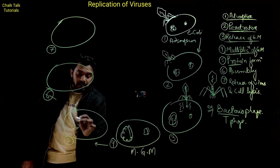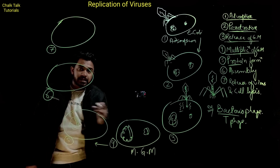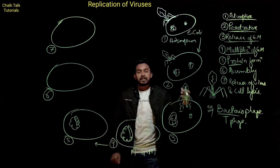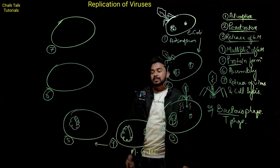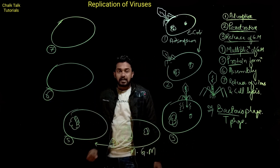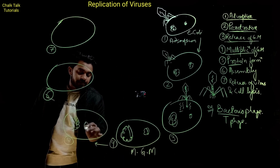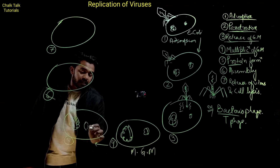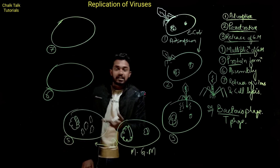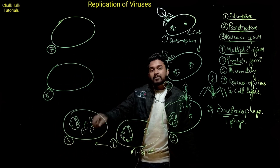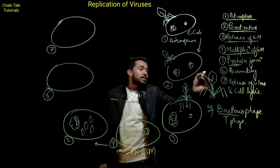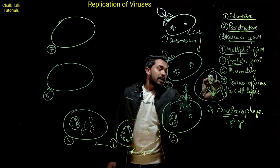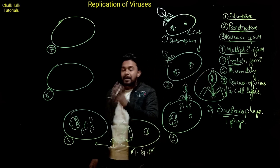Fifth step है protein formation। जो genetic material था वो divide हो रहा है बार बार — एक से दो copy, दो से तीन copy, यही replication का मतलब है। तो जो bacteria अपने genetic material को divide करेगा, साथ में virus की genetic material को भी divide कर देगा। साथ में इसकी जो protein body थी, उसकी DNA से protein बनता है। Transcription और translation की process भी हो रही है, और इसके DNA से इसकी protein body भी बन गई। जो बाहर की यह protein होती है, इसको भी बना देगा bacterial cell।